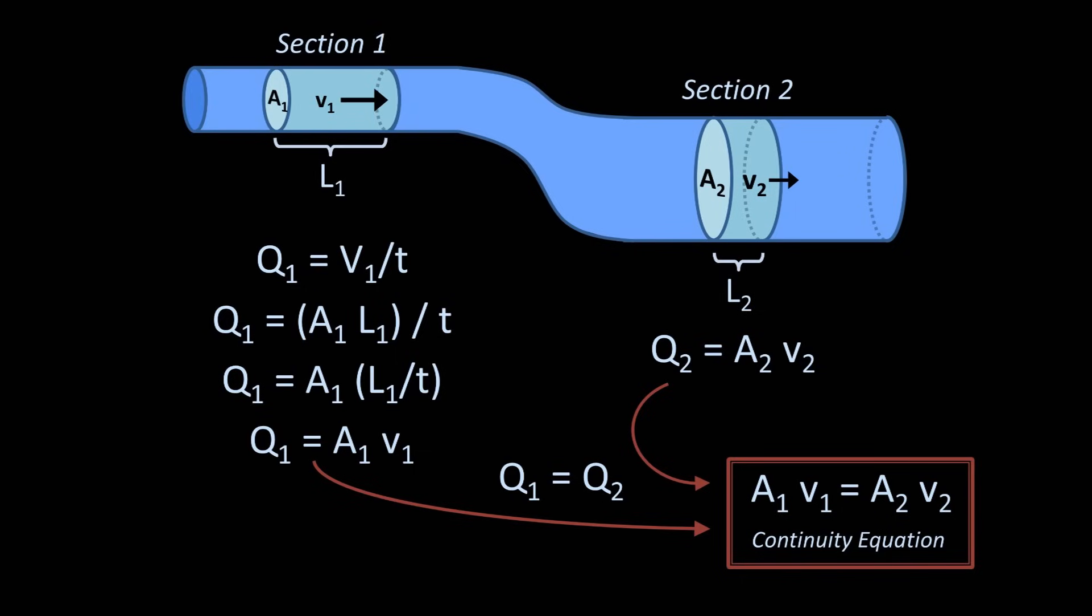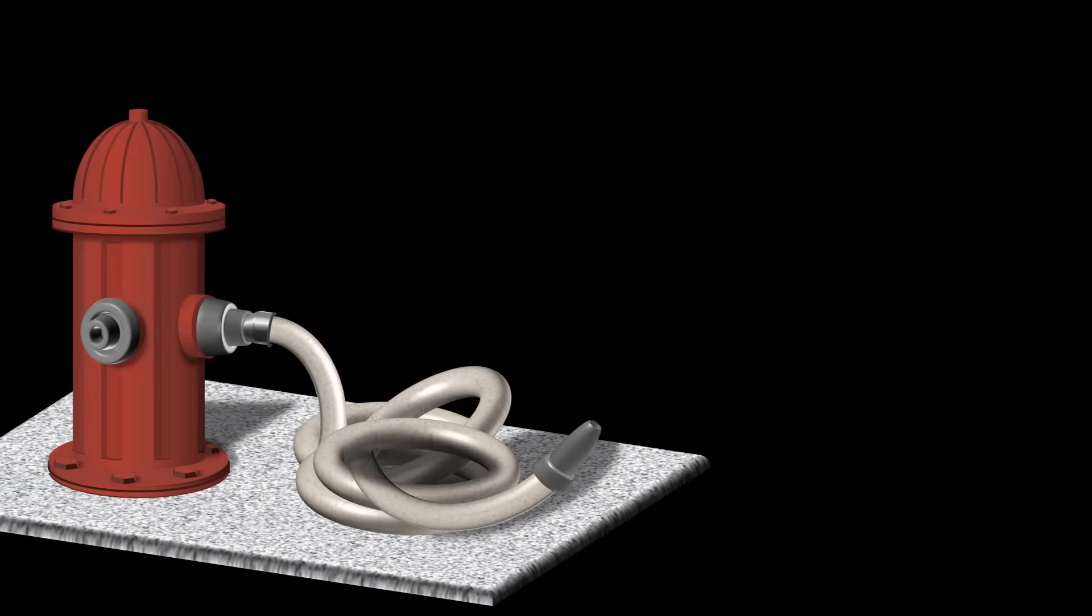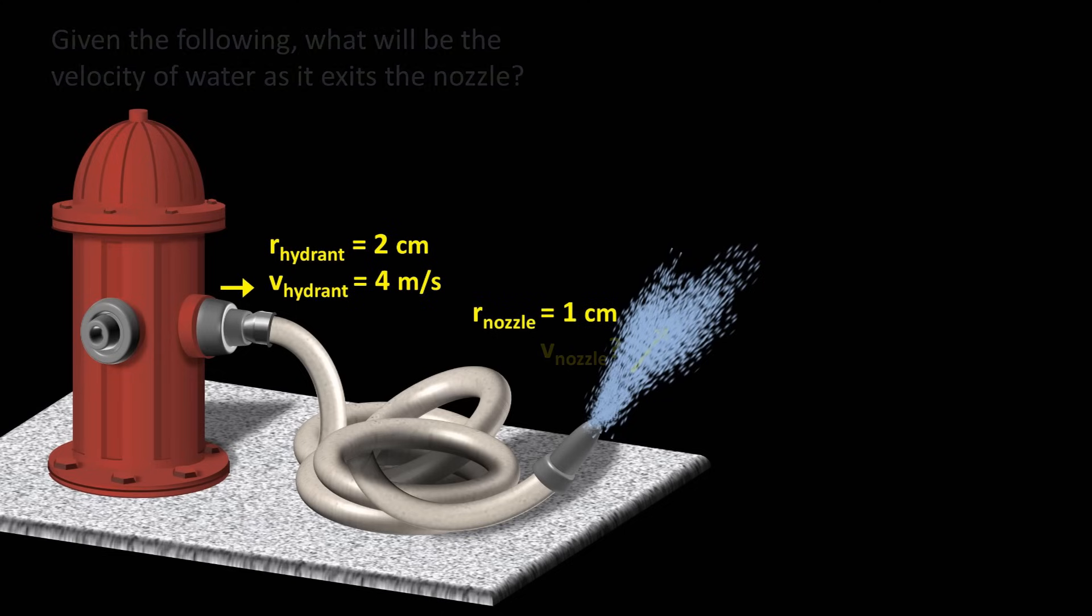Let's do two examples. Suppose we have a fire hydrant and we hook up a fire hose and turn it on. The radius of the outlet of the hydrant is 2 centimeters and water is passing through it at 4 meters per second. The radius of the nozzle is 1 centimeter.